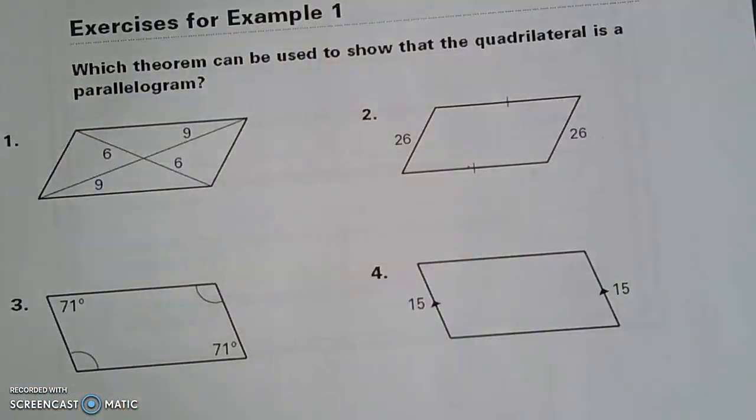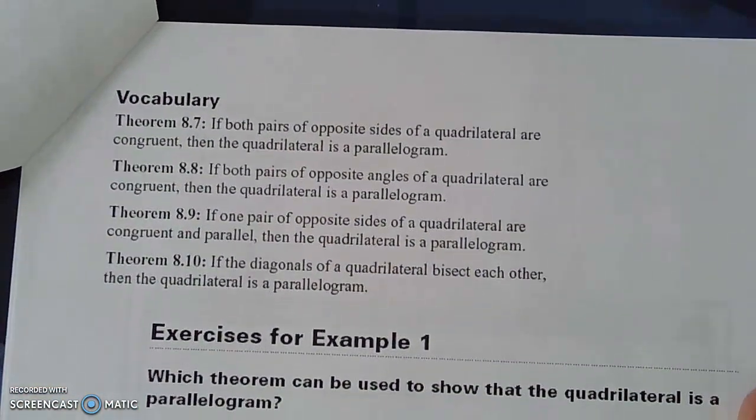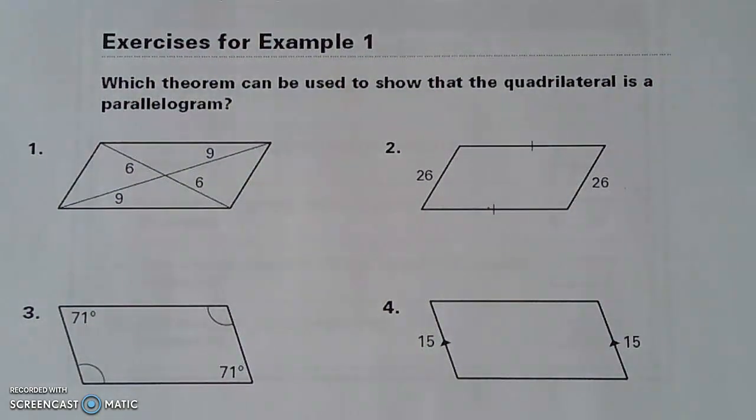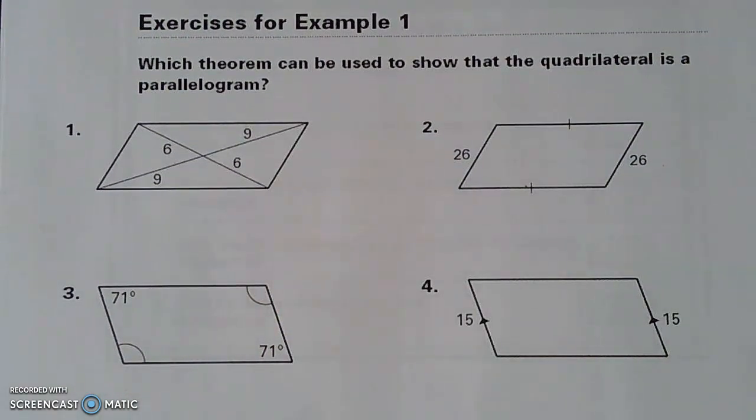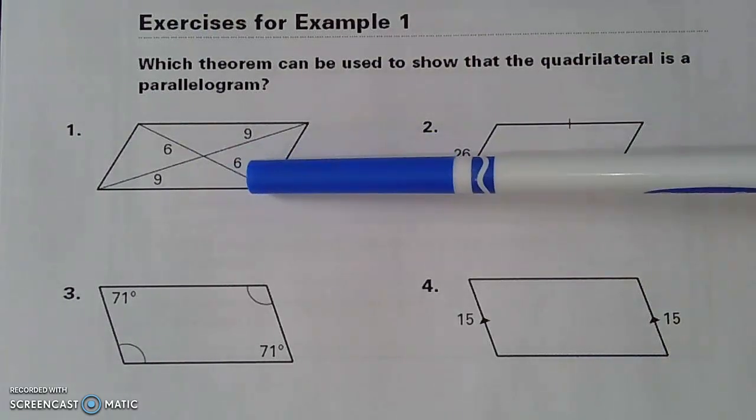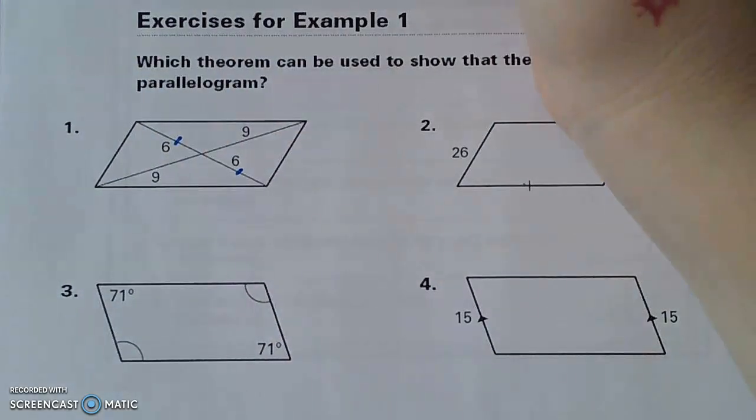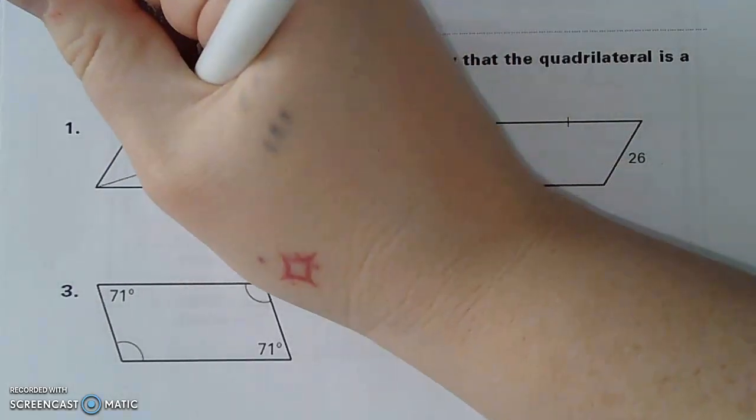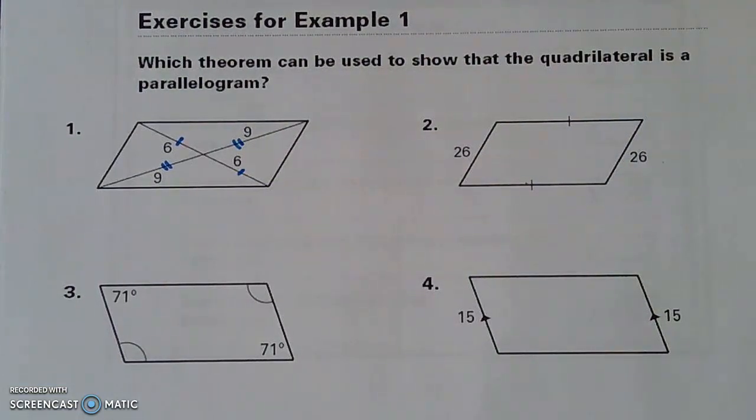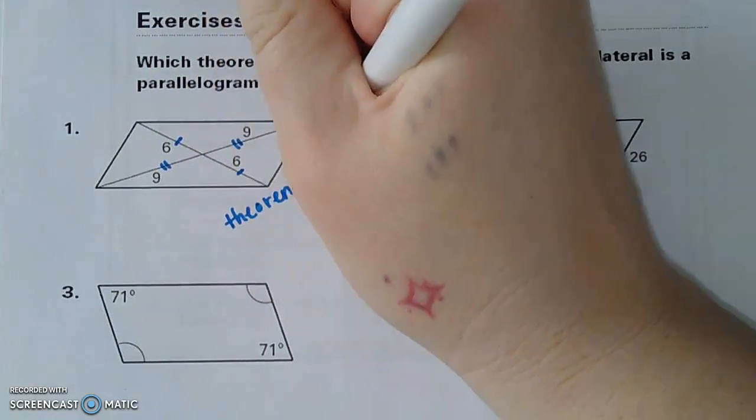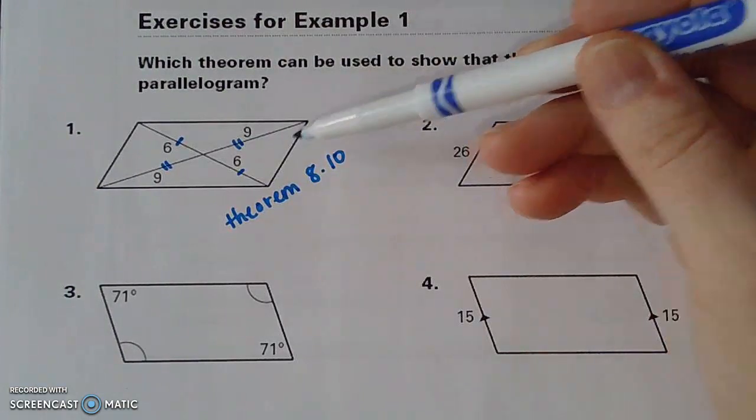So let's flip the page. On the top of the page, you'll see reference to the theorems that we just practiced on the page before. And this is just some more practice problems just like the ones we did. Which theorem can be used to show that the quadrilateral is a parallelogram? This looks almost identical as the one from the previous page. I see 6 and 6 on the same diagonal. I see 9 and 9 on the same diagonal. Those are diagonals that are being bisected. This is theorem 8.10, that the diagonals are bisecting each other. This is a parallelogram.